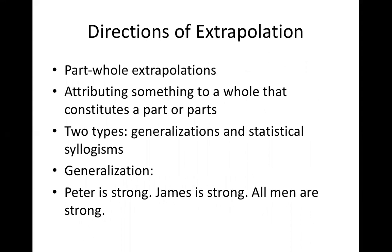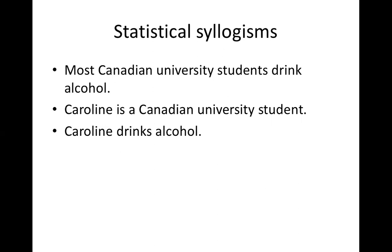Now let's look at different directions of extrapolations, which will show you the structure of different kinds of inductive arguments based on the direction of extrapolation. First, we have part-whole extrapolations — attributing something to a whole that constitutes a part or parts. We have two types: generalizations, and statistical syllogisms. Generalization: Peter is strong, James is strong, therefore all men are strong. You are generalizing from Peter and James to all men. You can see it's not a strong argument. Then statistical syllogisms: most Canadian university students drink alcohol; Caroline is a Canadian university student; therefore Caroline drinks alcohol. You can also say Caroline does not drink alcohol, because you said most — Caroline could be among the few who don't drink. So again, this argument is porous.